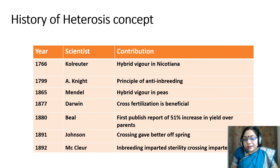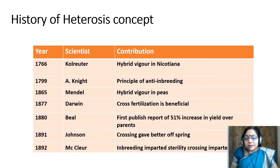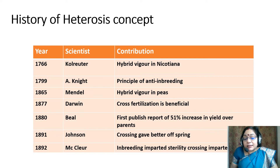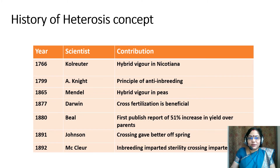Let us see the contribution of scientists. In 1892, McClure gave the concept that inbreeding imparts sterility and crossing imparts hybrid vigor, that is heterosis.